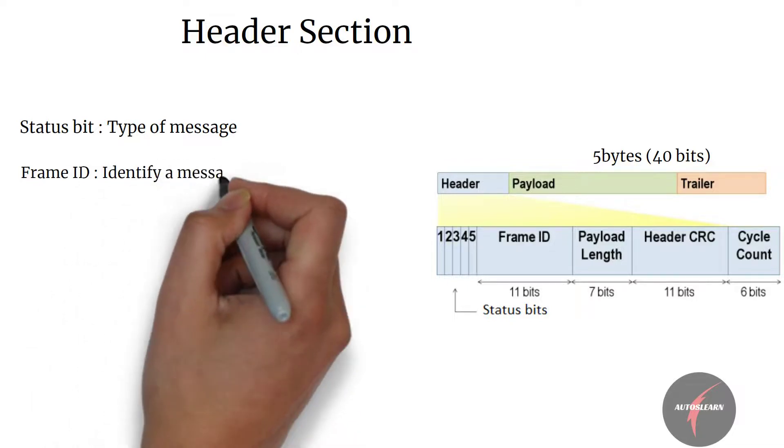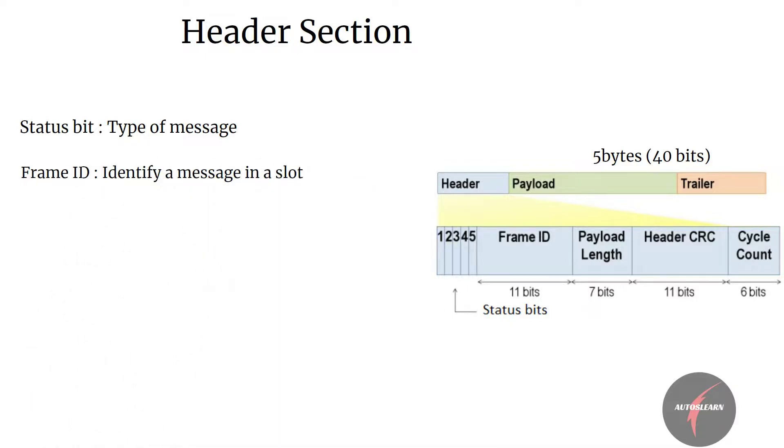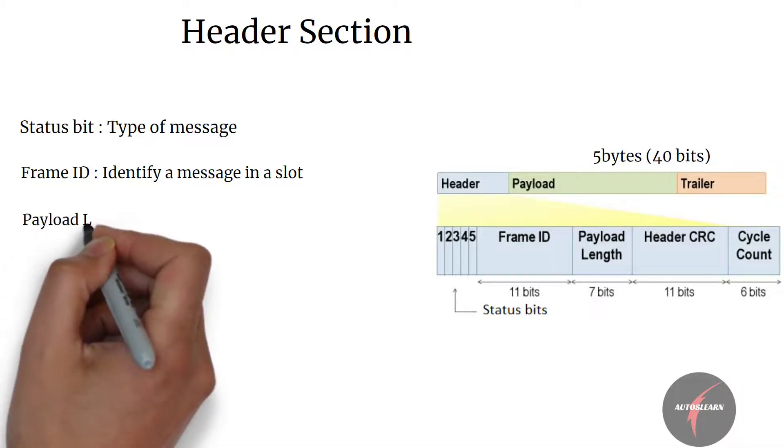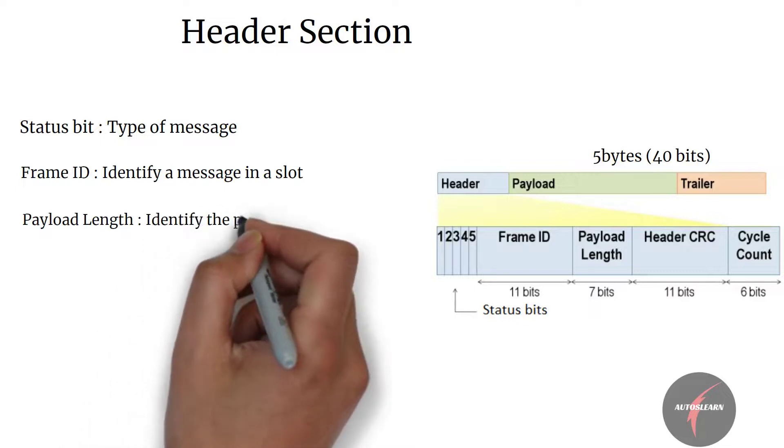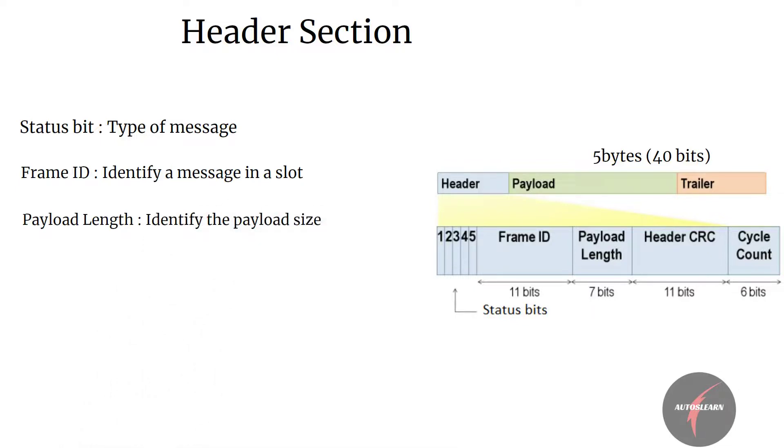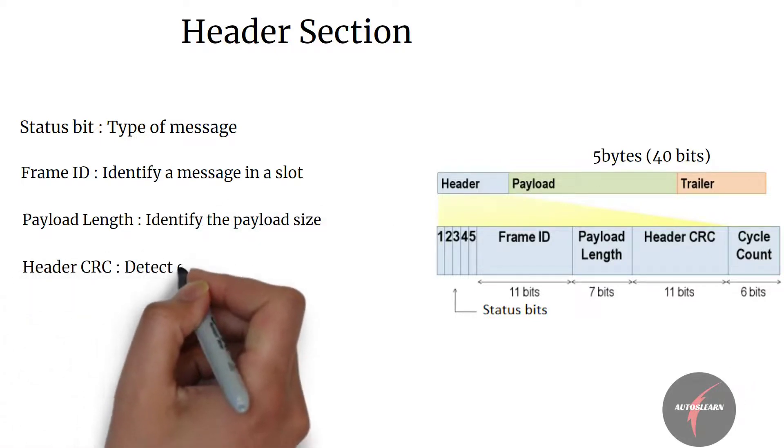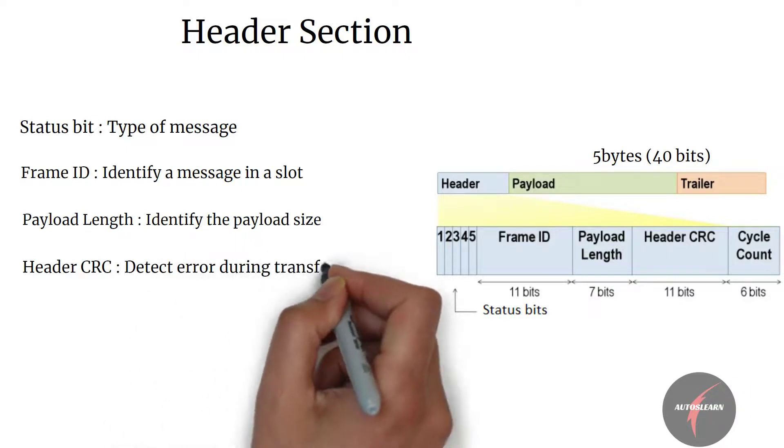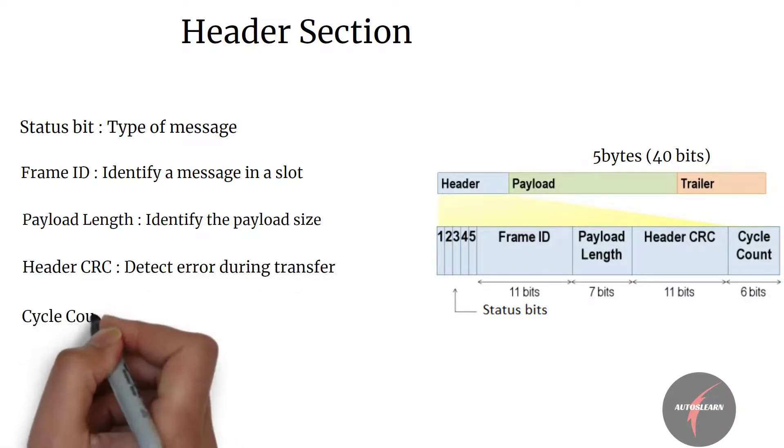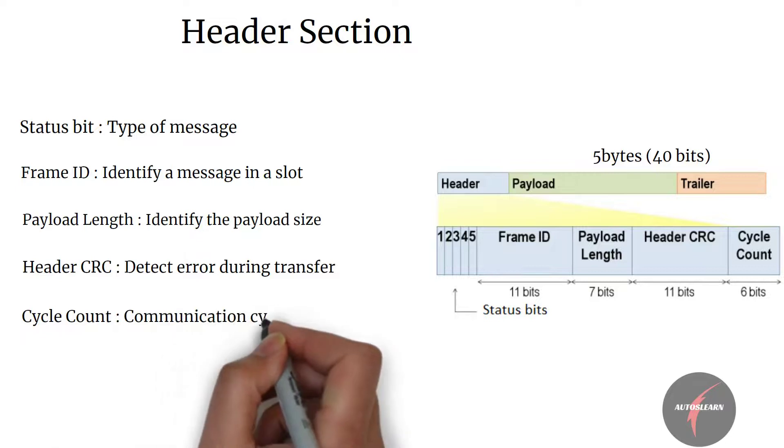Frame ID is used to identify a message corresponding to a slot. All IDs may be used except for zero. Payload length is used to identify the payload size. Header CRC is used to detect errors during transfer of the above data, and cycle count contains the value of the counter that increments with each communication cycle.